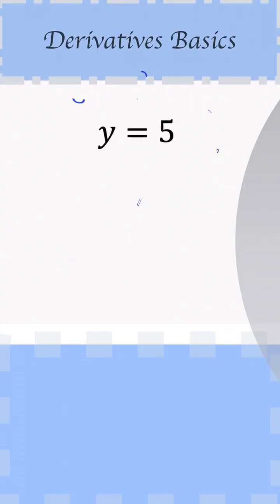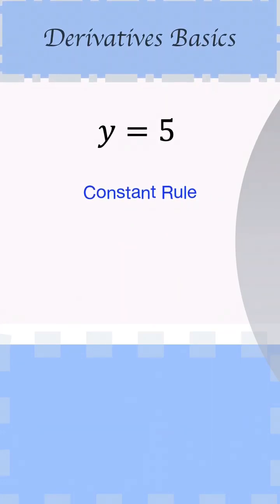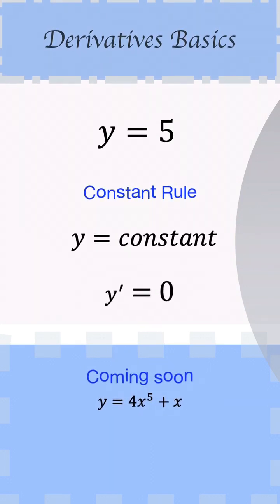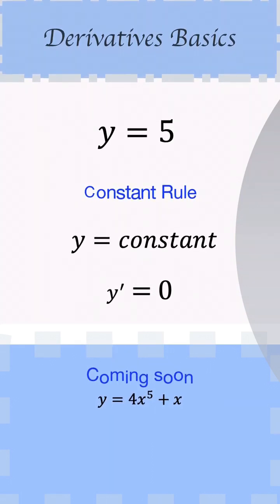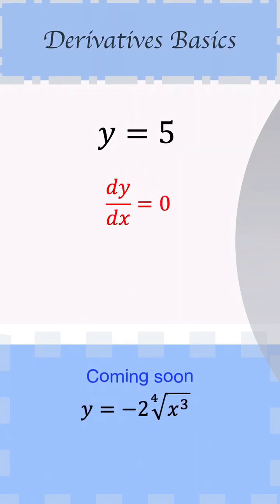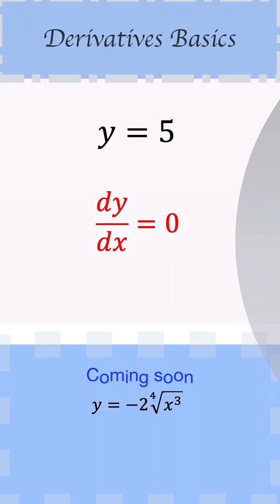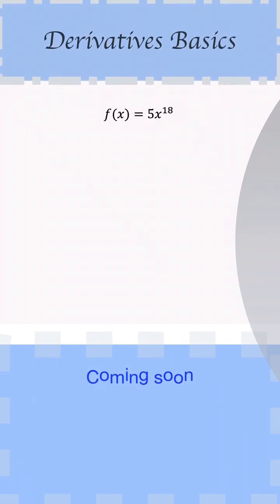Here we have y equals 5. According to the constant rule, we know that when y equals a constant, the derivative y prime is going to be equal to 0. So y equals 5 here, so we can say dy/dx is equal to 0. Straightforward, you don't need to think about it.